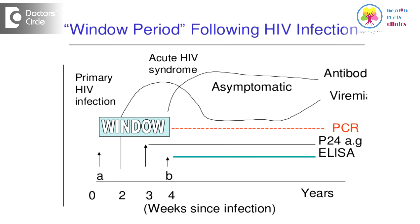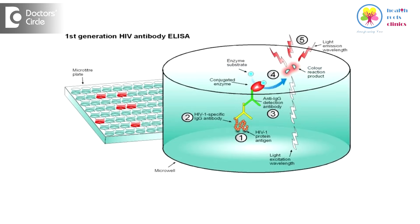Let's first understand what the window period means. The term window period is used for that time duration where HIV infection has already occurred but the body has not had enough time to make antibodies against the HIV virus which can be detected by common screening tests such as the ELISA.